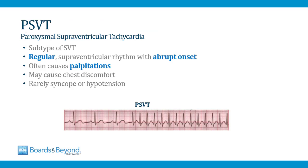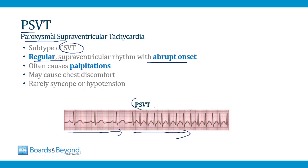A PSVT is a paroxysmal supraventricular tachycardia — a special kind of SVT that is a regular supraventricular rhythm with an abrupt onset and usually an abrupt offset. Looking at an ECG example, the patient starts with normal sinus rhythm and then there is the abrupt onset of a regular supraventricular tachycardia — that is the definition of a PSVT. PSVTs are distinguished from other SVTs by their abrupt onset and regular rhythm.